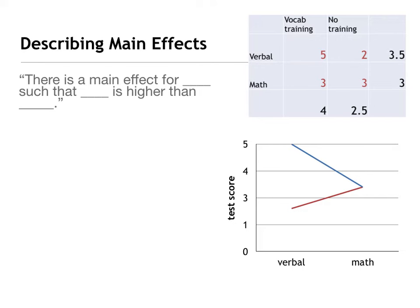Was there a difference between verbal scores and math scores? We look at the marginal means — we have verbal at three and a half, and math at three. We're going to say that any non-zero difference is something we're going to describe. So we have a non-zero difference of half a point. We would say there's a main effect for the kind of test, such that verbal scores are higher than math scores.